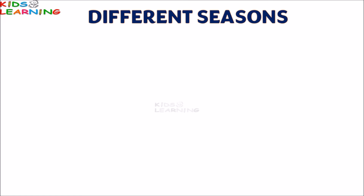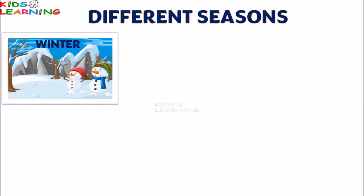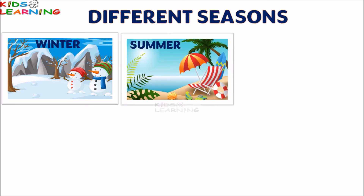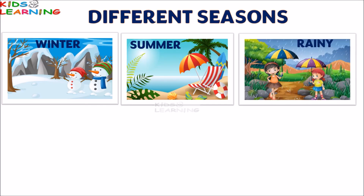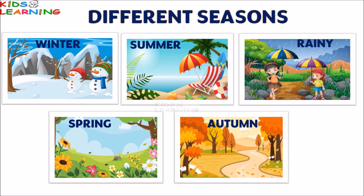Different seasons: During winter, the weather remains cold, foggy and snowy. During summer, the weather remains hot and sunny. During rainy season, the weather remains rainy and sometimes stormy too. During spring, the weather is pleasant and calm. During autumn, the weather becomes colder and windy.